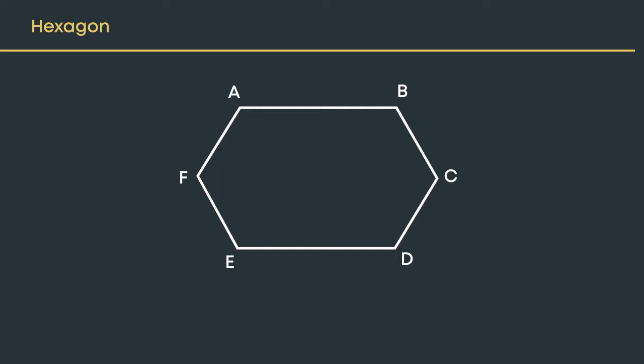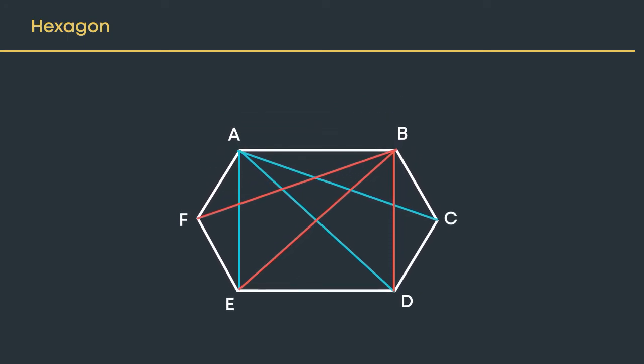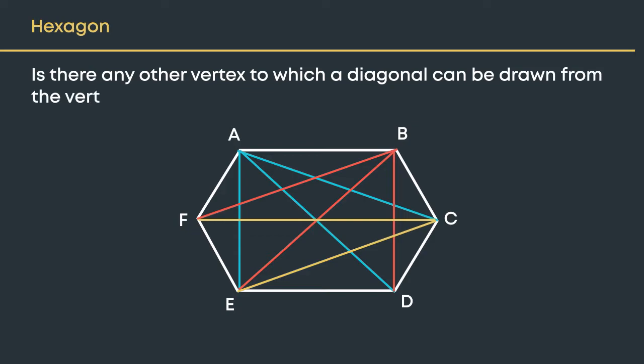Now let us draw the diagonals of the hexagon one by one. Let us start with vertex A. From vertex A, we can draw three diagonals. From vertex B, again we can draw three diagonals. Can we draw three diagonals from vertex C also? Let us check by drawing diagonals from vertex C one by one. Is there any other vertex to which a diagonal can be drawn from vertex C? Yes, to vertex A. But the diagonal has been drawn already, so we need not draw it again.